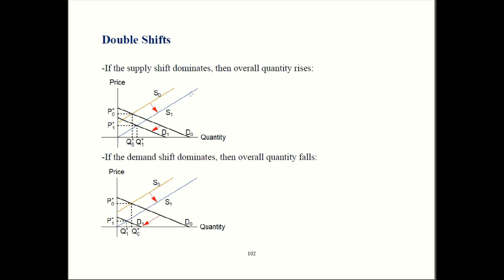When supply shifts, supply goes out here to S1. Demand shifts brings us out here to D1. Where do they meet? That's going to be right over here. So that new quantity, Q1 star, is bigger than the original quantity. So in this case, quantity overall rose. Supply shift was bigger than demand shift. And supply caused quantity to go up. So overall quantity goes up.